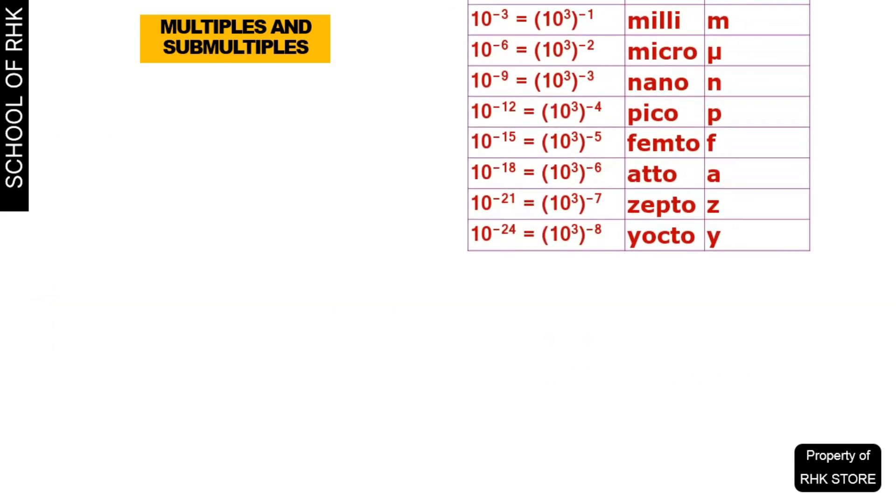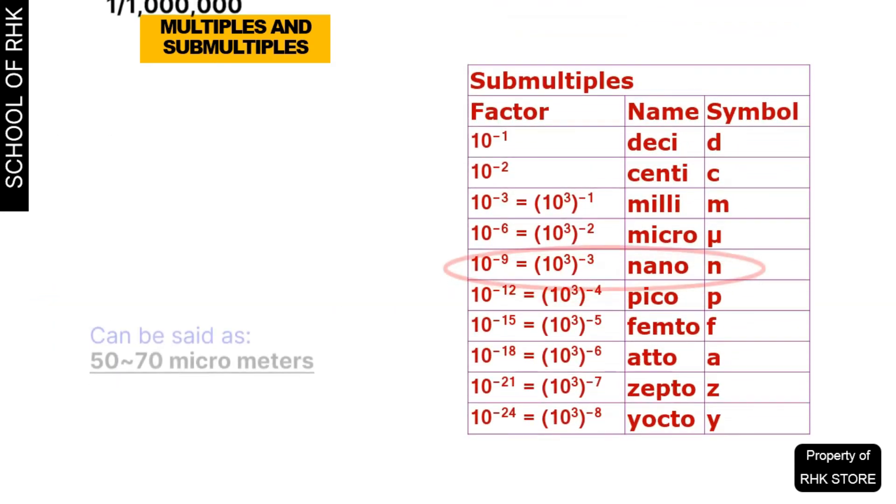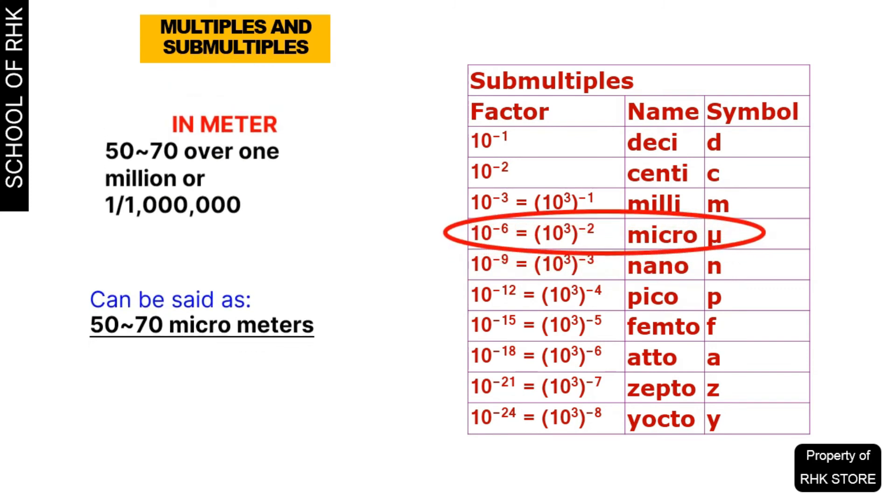On the other hand, in small value, we can say the diameter of a hair is 50 to 70 micrometer. Any further explanation of multiples and submultiples is beyond the scope of this tutorial.